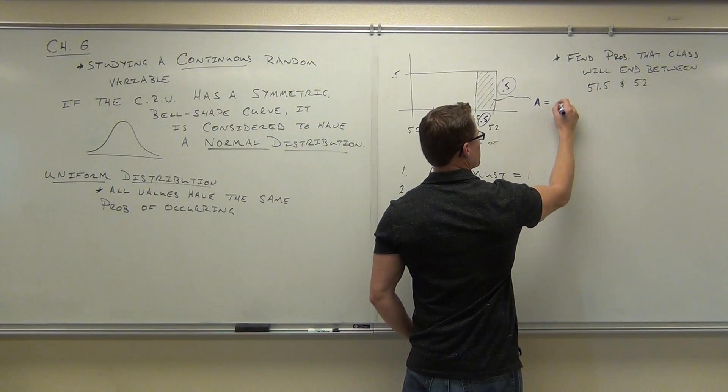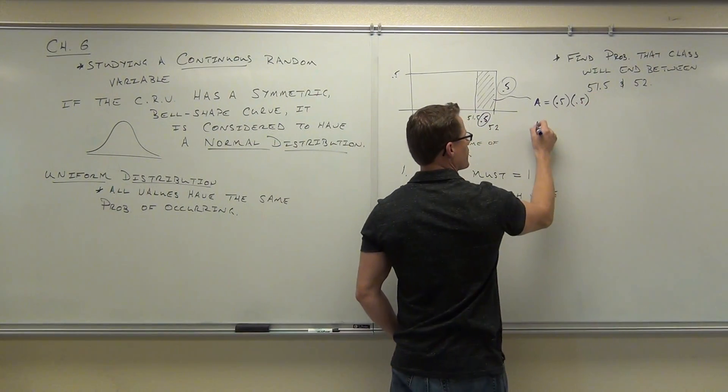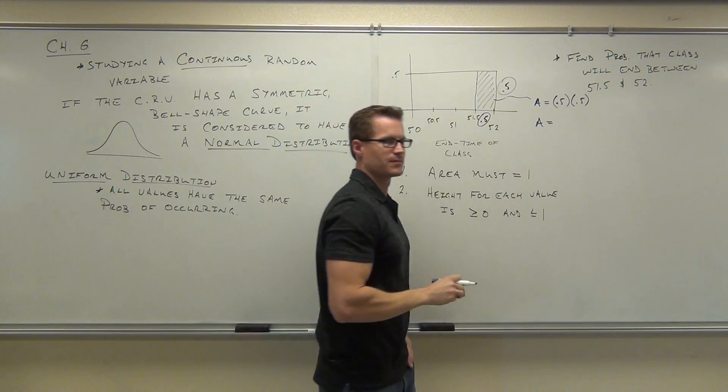Our area is 0.5 times 0.5. We can all do 0.5 times 0.5. How much is that? 0.25.